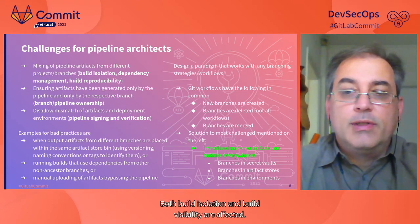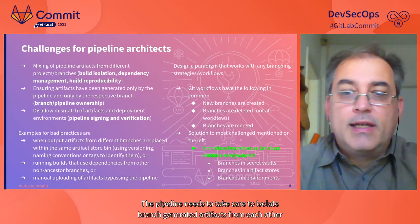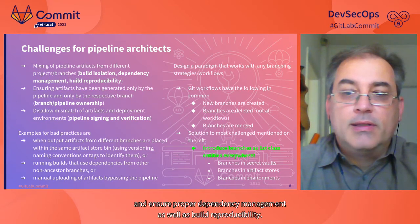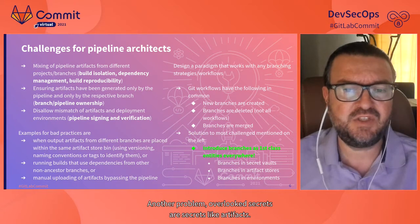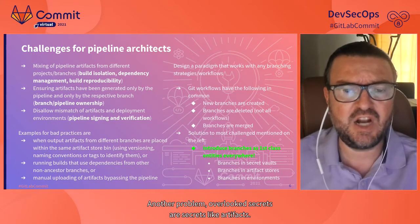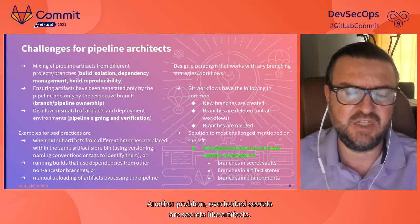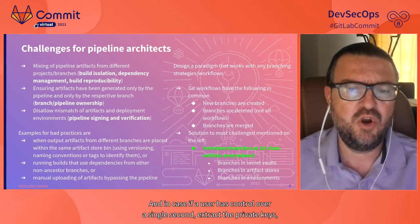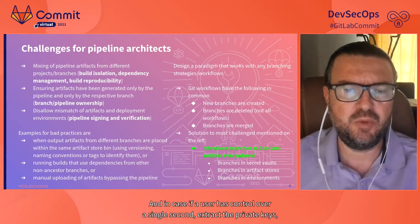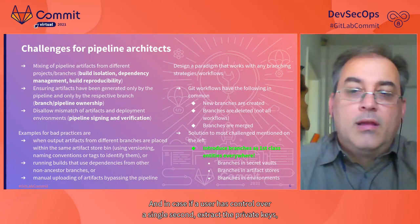This cooperative approach often fails and leads to mixing dependencies in builds or using wrong artifacts in deployments. Both build isolation and build reproducibility are affected. The pipeline needs to isolate branch-generated artifacts from each other and ensure proper dependency management, as well as build reproducibility. Another problem is leaked secrets, like artifact signing keys — if a user has control over a signing job, she can extract the private keys.